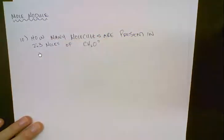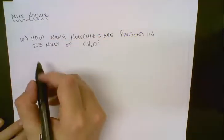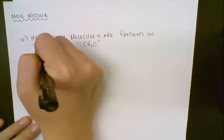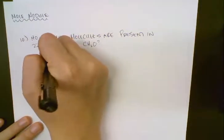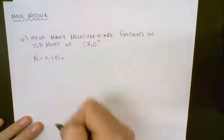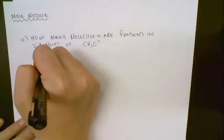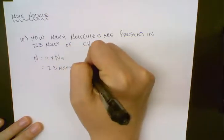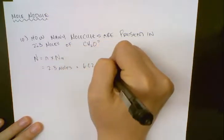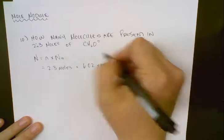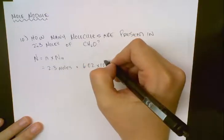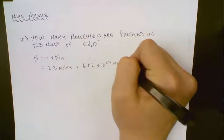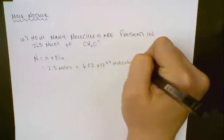Because it's asking for how many molecules, we know we're looking for big N. If we look at our formula sheet, we know number of particles is the number of moles times Avogadro's number. So in this case, we have 2.3 moles, and we're multiplying this by 6.02 times 10 to the 23. And because it's CH₂O, those are all nonmetals, we're dealing with a molecule.